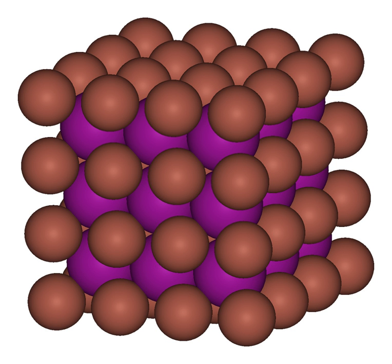TlI3 is a black crystalline solid prepared from TlI and I2 in aqueous HI. It does not contain thallium(III), but has the same structure as caesium iodide containing the linear I3- ion.